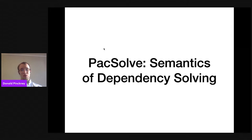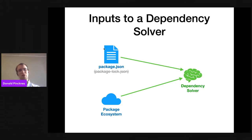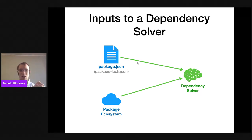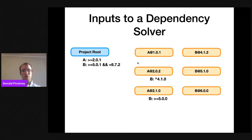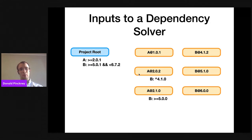Let's start with Paxolve. I want to lay out a mathematical semantics for what dependency solving is. A dependency solver receives the package.json that the user writes, as well as the current state of the entire package ecosystem, which contains dependency information for many different packages. The package.json defines what I'll call the project root node, where the programmer lists their dependencies. From the package ecosystem, we have a bunch of packages, each with published versions, and each version has a list of dependencies in the same format.